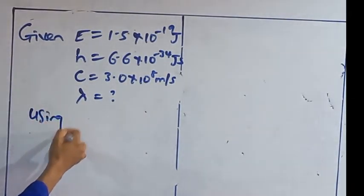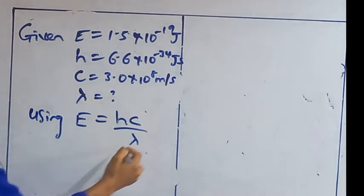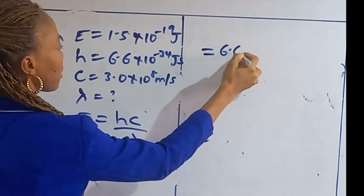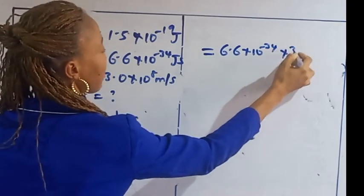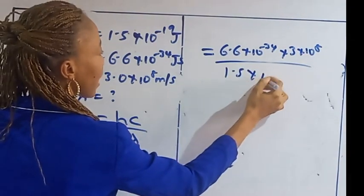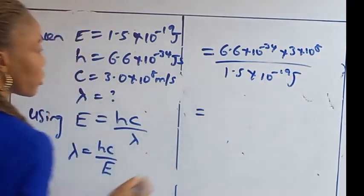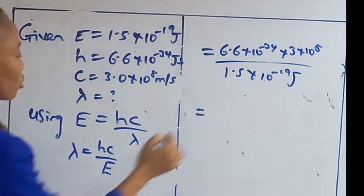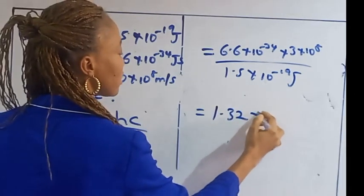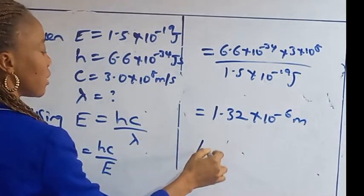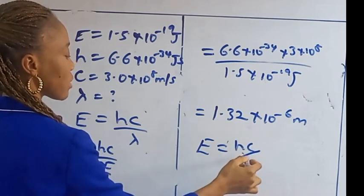Using the formula E equals hc upon lambda, the wavelength equals hc upon E. That gives us 6.6 times 10 to the power of minus 34 times 3.0 times 10 to the power of 8, divided by 1.5 times 10 to the power of minus 19 joules. We get the wavelength as 1.32 times 10 to the power of minus 6 meters. They can ask you for any of these quantities — just use the appropriate form of the formula.